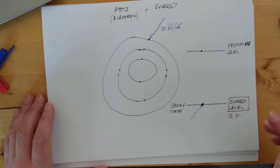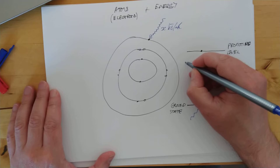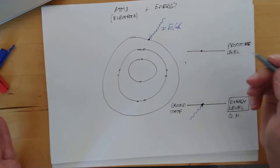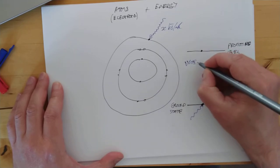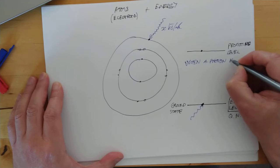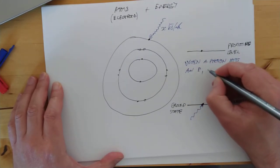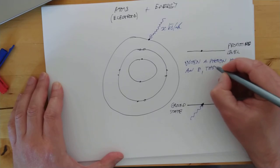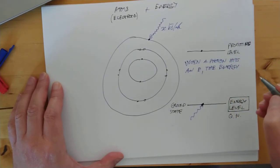So basically the concept that I'm trying to get across to you today is an answer to my question: what happens to the energy? The answer is, when a photon hits an electron, the energy in the photon is absorbed and promotes that electron up to a higher energy level.